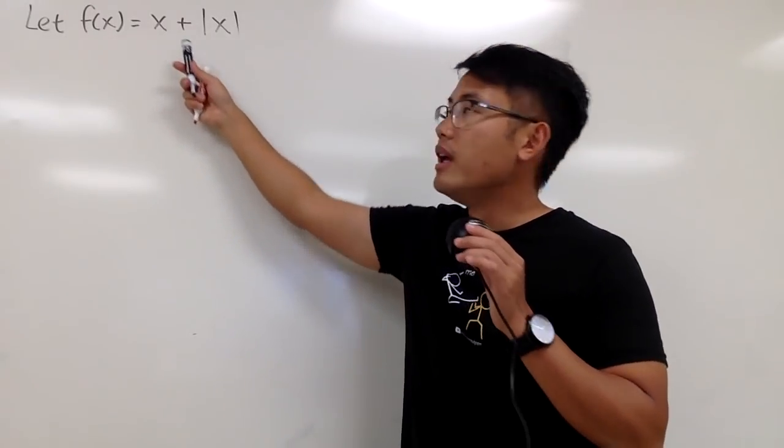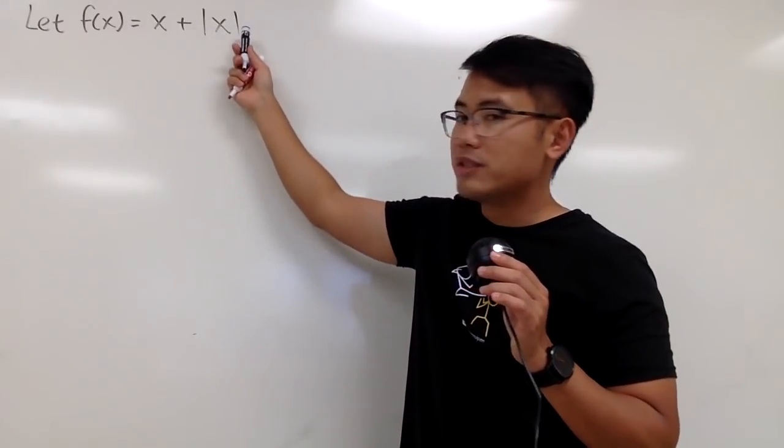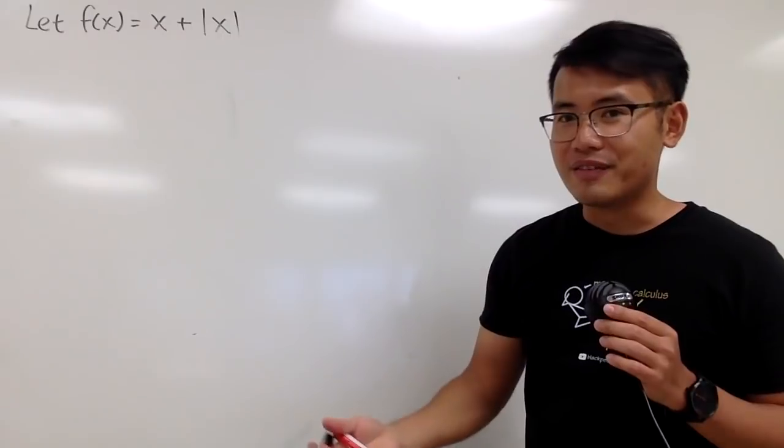Okay, we're going to investigate this function, x plus the absolute value of x. And as we know, this right here is a piecewise function, so why don't we try to use its piecewise definition for it?